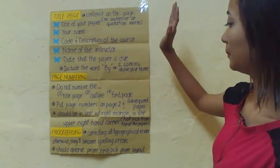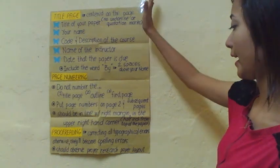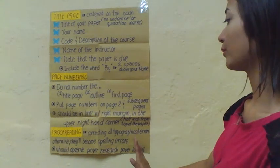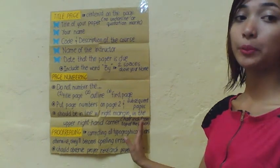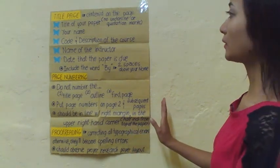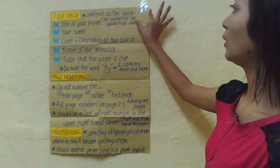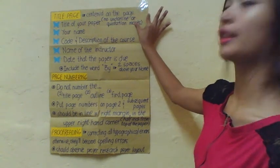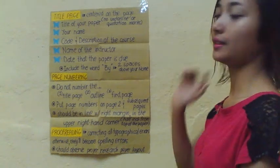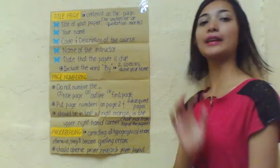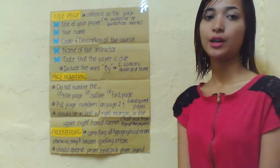The page number is included in the right-hand corner, half an inch from the top of the paper. We put the indention one inch, and the page number will be at half an inch. The last topic in my report is proofreading.